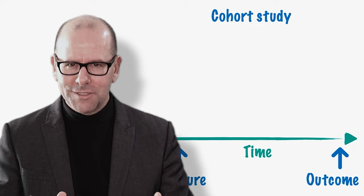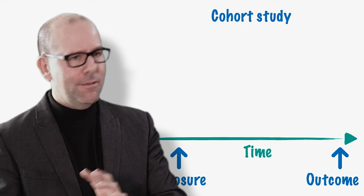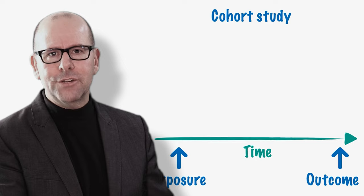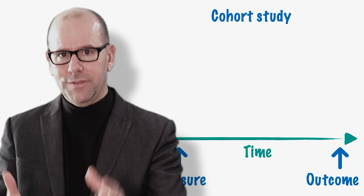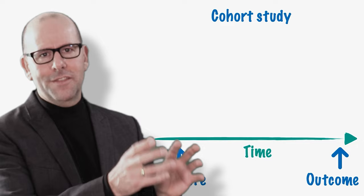When we do a cohort study, our starting point is the exposure of interest. We have a cohort of people who've been exposed to something, we collect that data, and we follow them over time — and it could be a long time. We collect data about the extent to which outcomes of interest emerge in that group. In the analysis, we compare people who were exposed to the exposure of interest to people who were not. Interestingly, you can have multiple outcomes of interest.